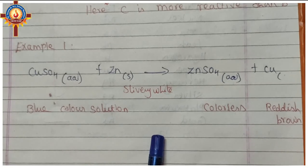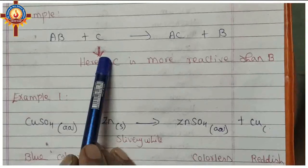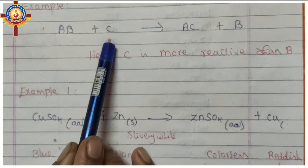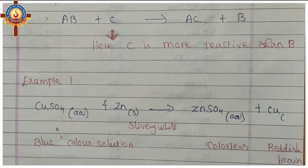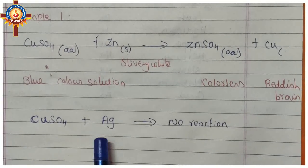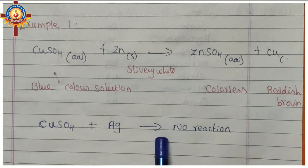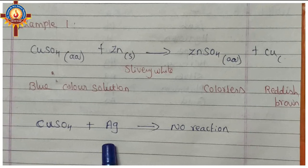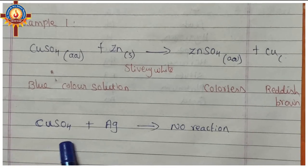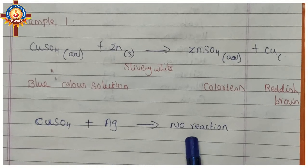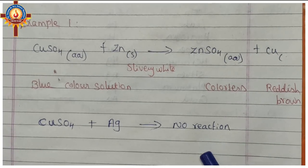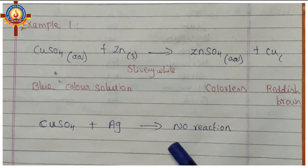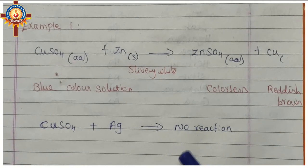In displacement reactions, only a more reactive element can displace a less reactive element. For example, copper sulfate plus silver — there will be no reaction, because silver is less reactive than copper. For this we need to know the order of reactivity: which element is more reactive than which one.